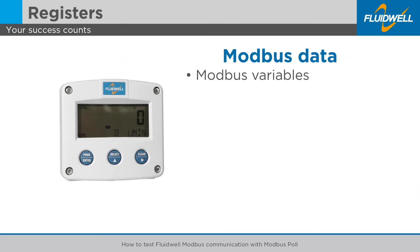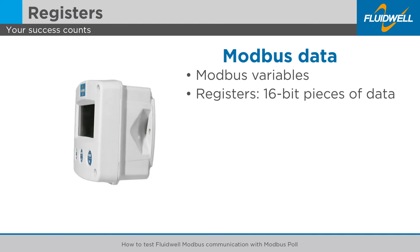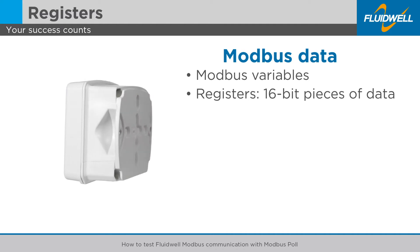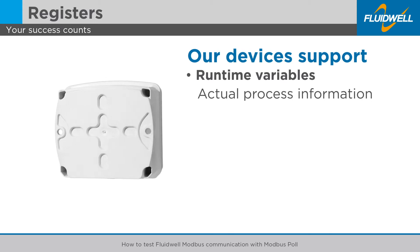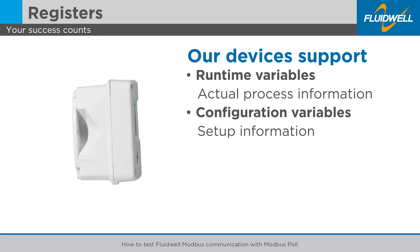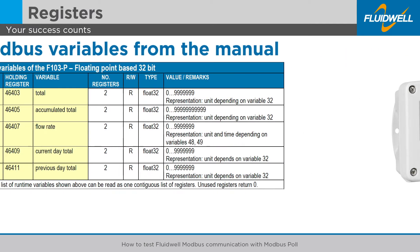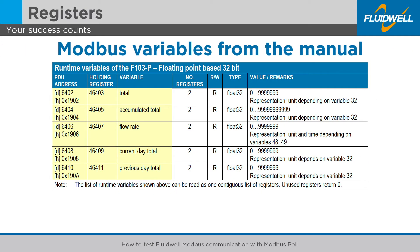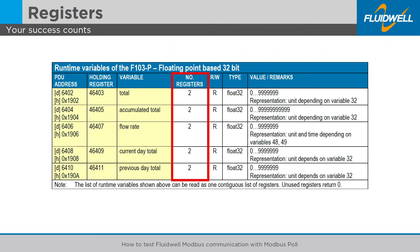Modbus data or variables are most often read and written as registers, which are 16-bit pieces of data. Our devices support runtime variables with actual process information, and configuration variables with setup information. The variables are indicated in each manual with PDU address in both decimal and hexadecimal codes, holding register number and number of registers.